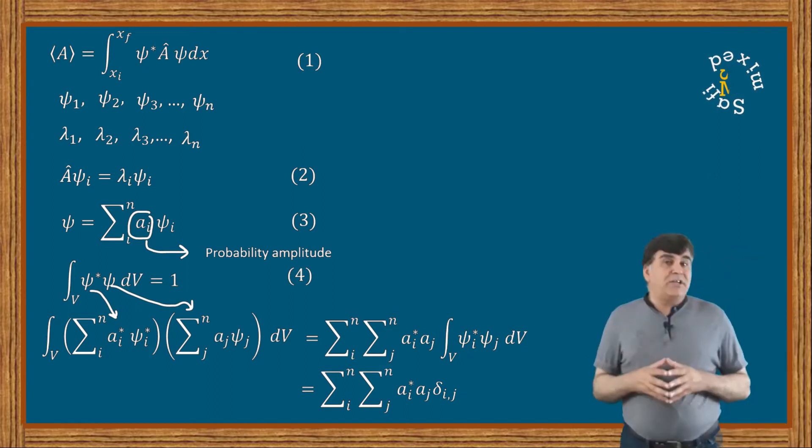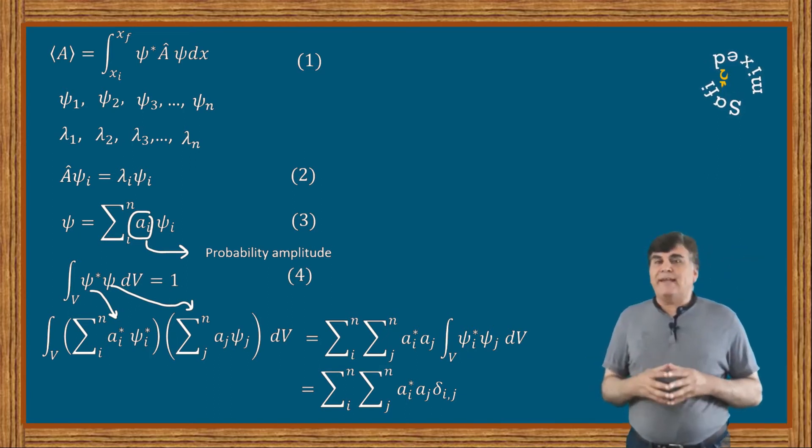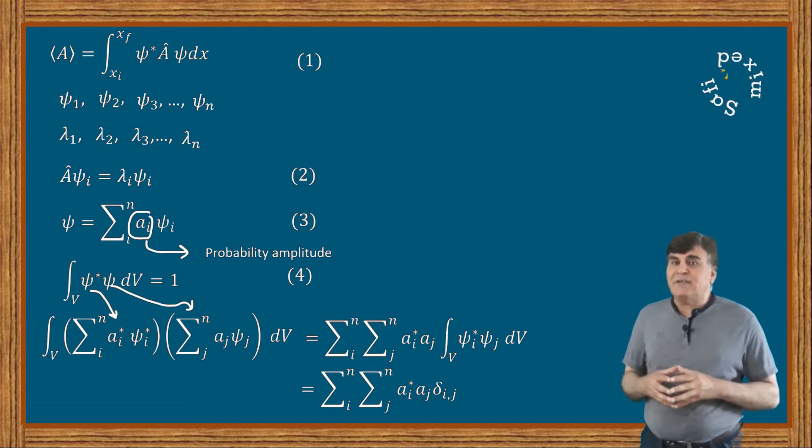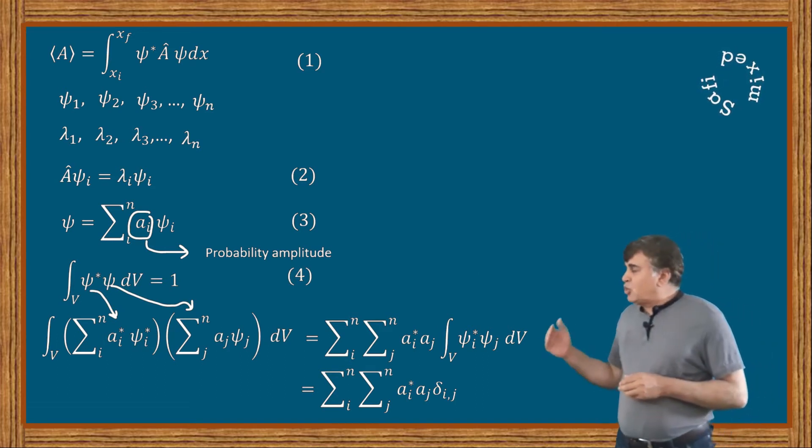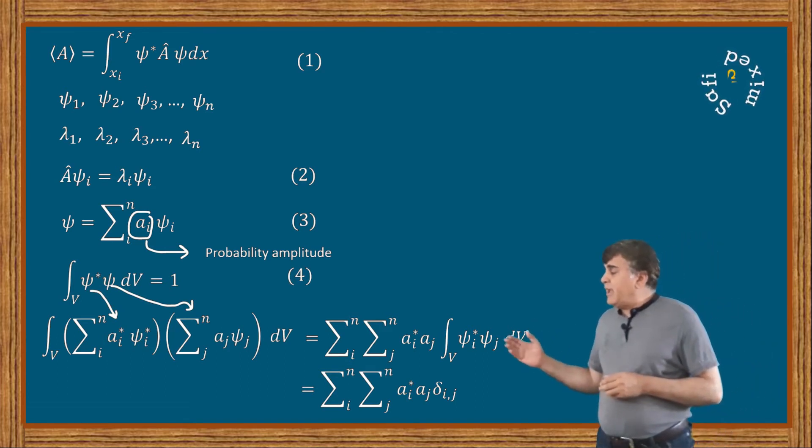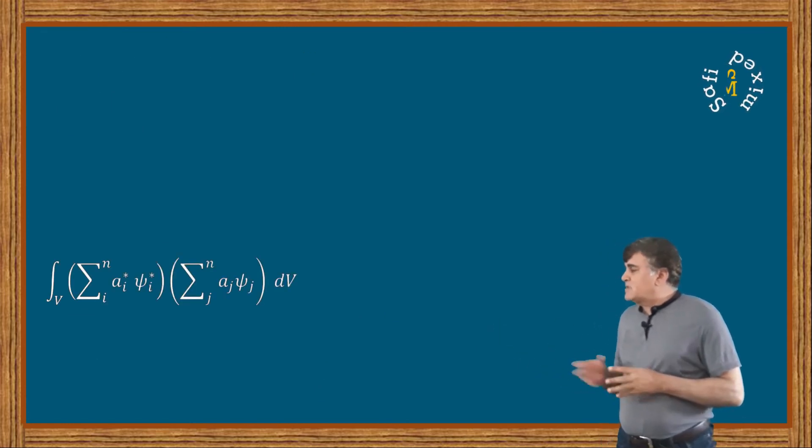And employing the delta function would cancel one of the two summations. In this case I am dropping the summation over j, and the equation can be written in the form sum over i, aᵢ* into aᵢ.